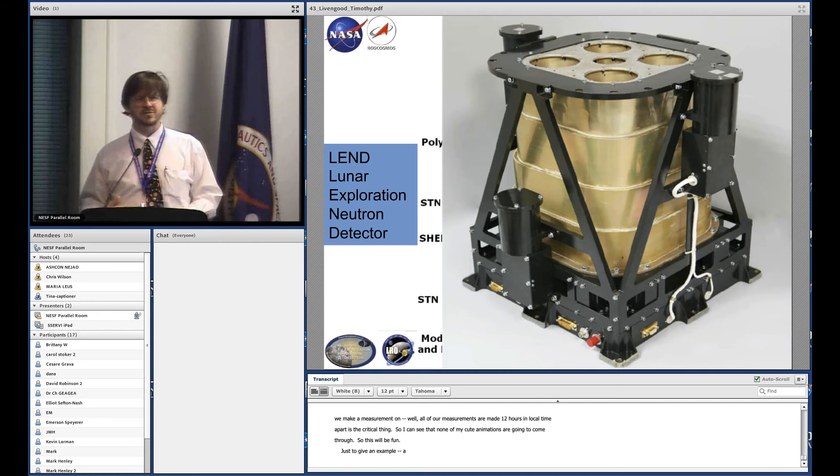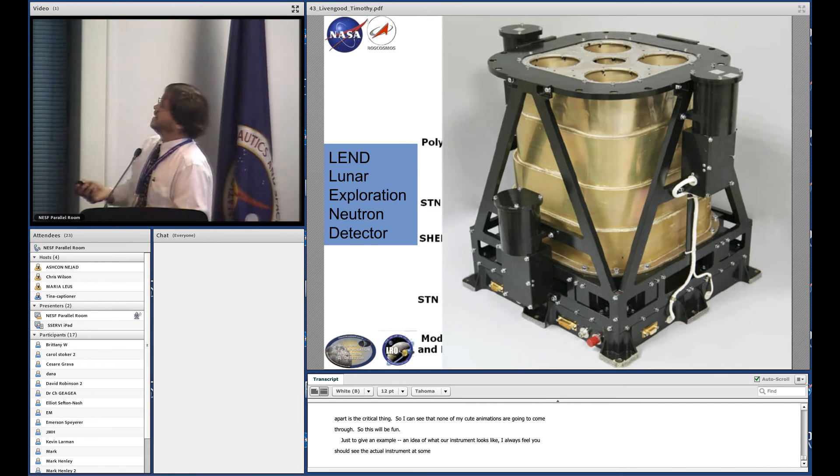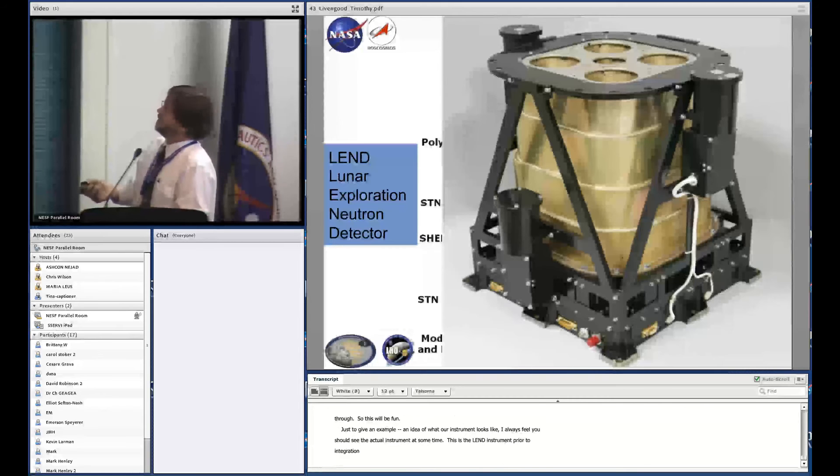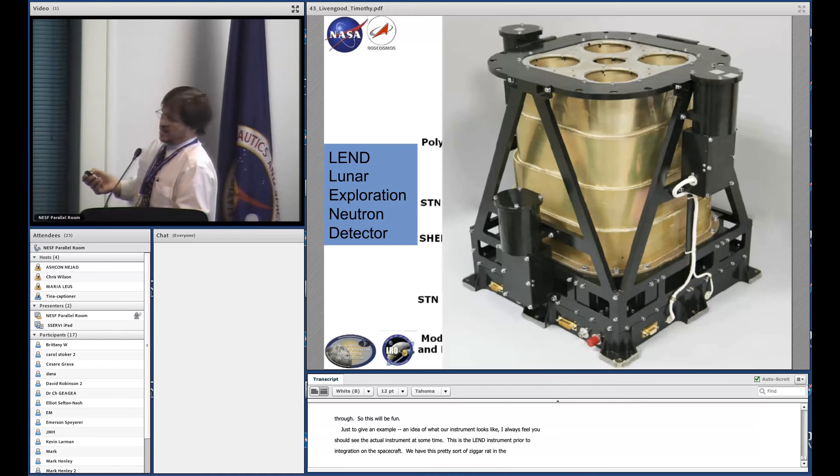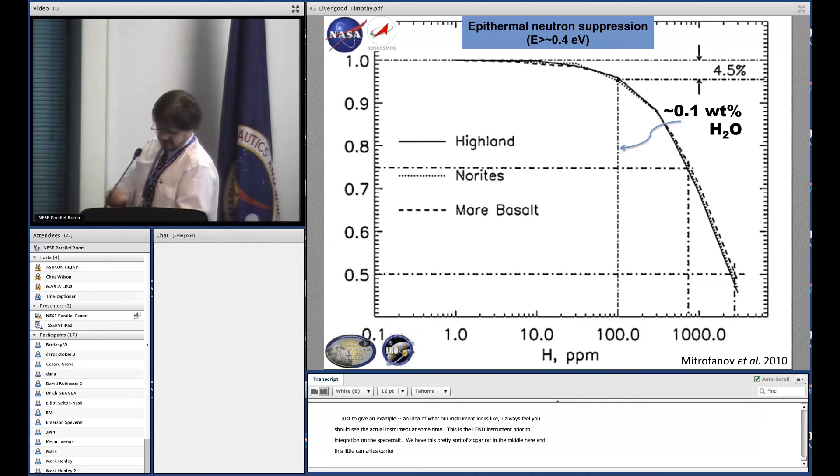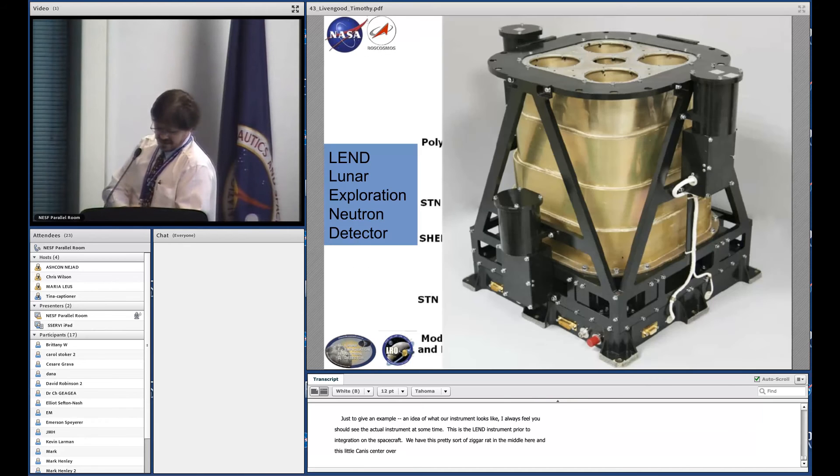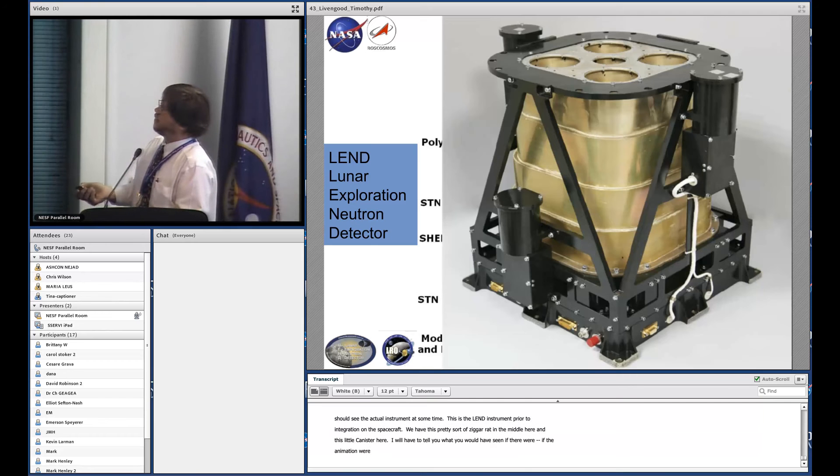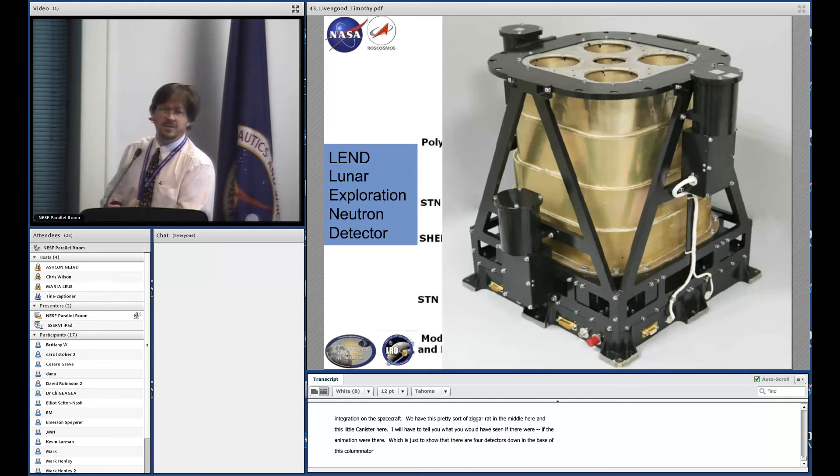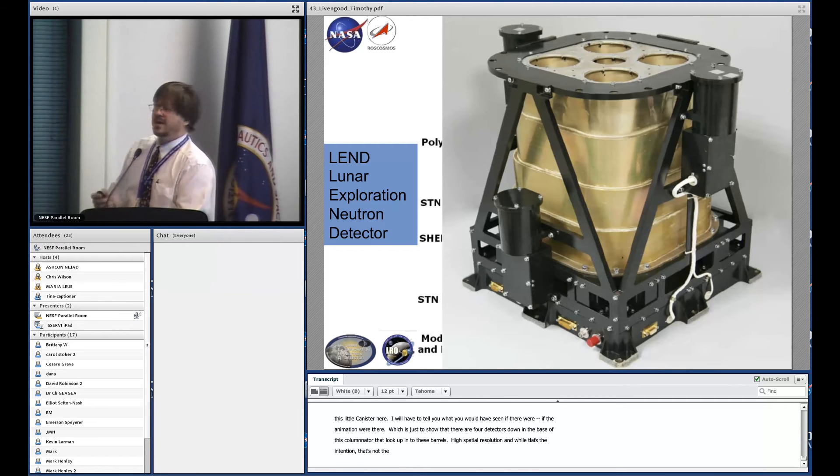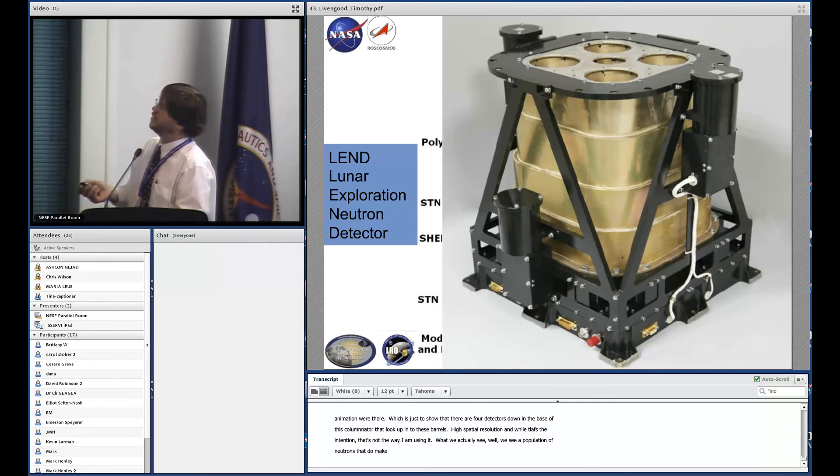Here's the LEND instrument prior to integration on the spacecraft. We have this pretty ziggurat in the middle, and this little canister is our uncollimated epithermal neutron detector. We have collimated detectors down inside there. There are four detectors down in the base of this collimator that look up through these barrels, intended to make collimated measurements of the moon with relatively high spatial resolution to map the polar regions.